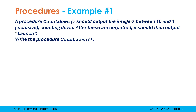Let's look at a potential example exam question. A procedure called countdown should output the integers between 10 and 1 inclusive, counting down. After these are outputted, it should then output 'launch'. We need to write the procedure countdown. It's told us the name and what it should do — we just need to write the definition. It doesn't mention calling anywhere, therefore I'm just writing the definition.